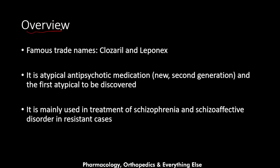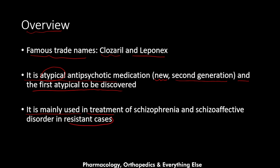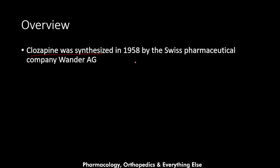Let's start with an overview. Clozapine is the scientific name of the medication, and famous trade names for it are Clozaril and Laponex. It is an atypical antipsychotic medication. Antipsychotics are classified into typicals and atypicals — typicals are the old or first generation antipsychotics, while atypicals are the new or second generation antipsychotics. Clozapine is the first atypical antipsychotic to be discovered, mainly used in treatment-resistant schizophrenia and schizoaffective disorder. It was synthesized in 1958 by the Swiss pharmaceutical company Wander AG.